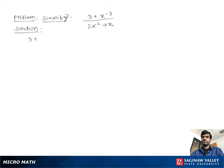Simplify 3 plus x to the negative 3 over 2 times x to the negative 2 plus x. Now our second step to make the x to the negative 3 as a positive radical we can write 1 over x cube.